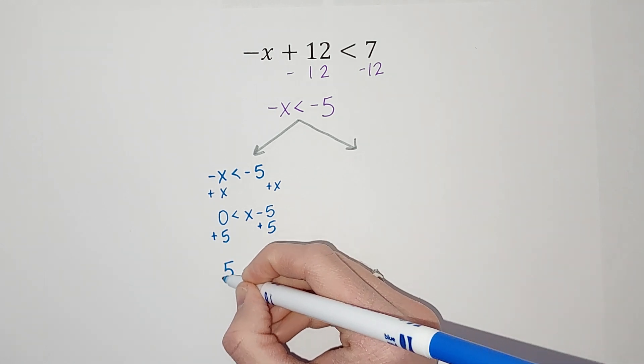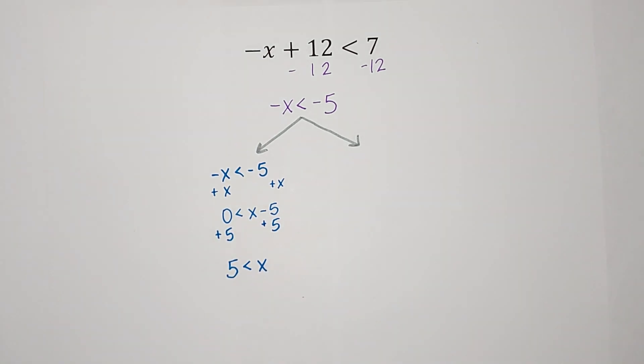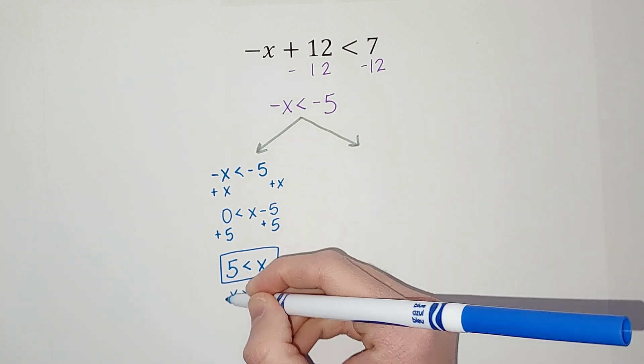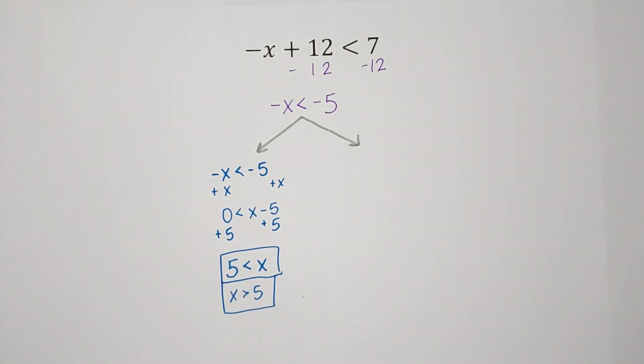So we get 5 is less than x. Or we could write it as x is greater than 5. Either way means the same thing. So it could be either one of those.